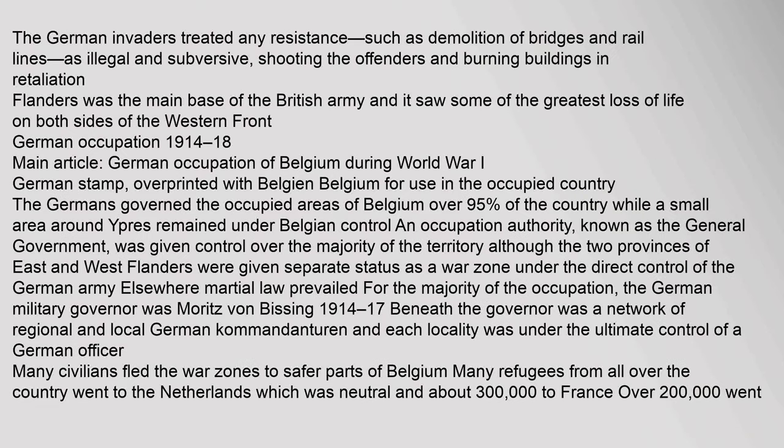The German invaders treated any resistance, such as demolition of bridges and rail lines, as illegal and subversive, shooting the offenders and burning buildings in retaliation. Flanders was the main base of the British army and it saw some of the greatest loss of life on both sides of the Western Front.